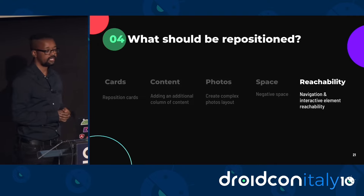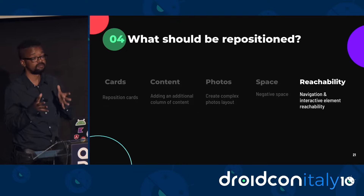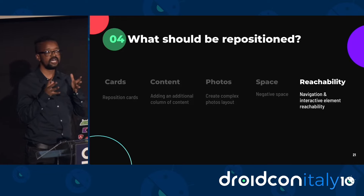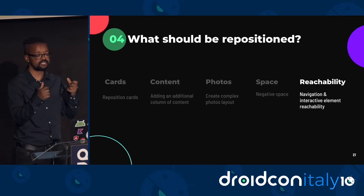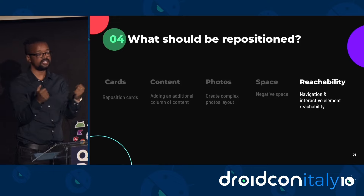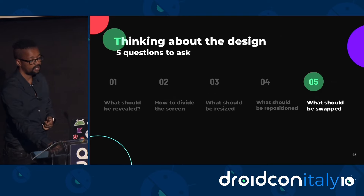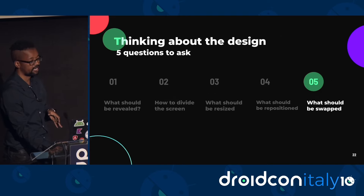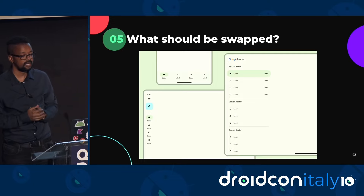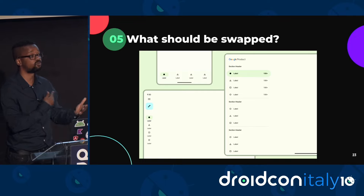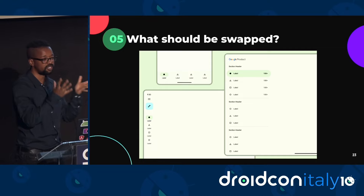The fifth one is reachability. Having navigation or menu items at the bottom of the screen makes sense on a compact device, but when you're on an expanded or medium device, having things at the bottom doesn't work because users tend to have their thumbs at the top and can't reach the bottom. The fifth question about design is: what should be swapped? Elements or components on a screen can be swapped or repositioned to take advantage of the additional screen space and to make things easier for users to reach.